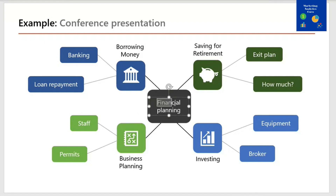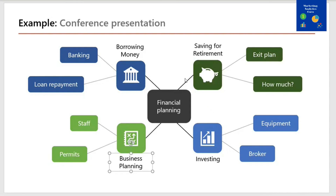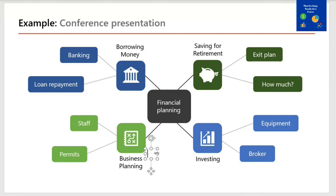First, choose an industry of interest — select a specific industry that you are interested in and would like to conduct a literature review on. Then identify key concepts: brainstorm and identify the main concepts related to the selected industry. These concepts can be written down as keywords or short phrases.